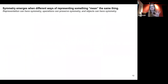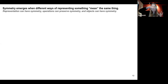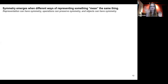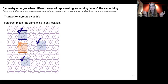Symmetry emerges when different ways of representing something mean the same thing. You can talk about symmetry in many different ways: the symmetry of the representation — the space of possibilities something can be — operations that preserve symmetry, and objects themselves having symmetry. It can be really confusing as to what people actually mean by symmetry. I'll leave the operations about preserving symmetry for later in the talk, but I'll at least give examples of what it means for a representation to have symmetry versus an object having symmetry.